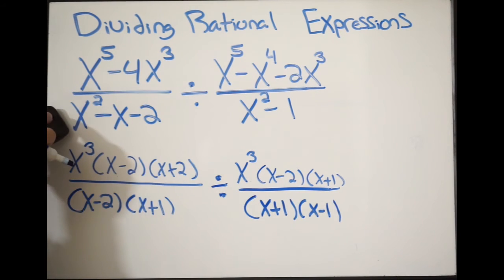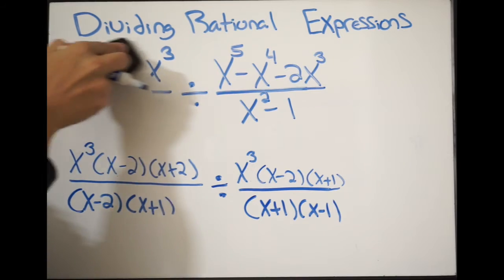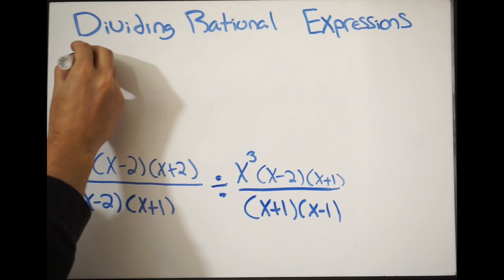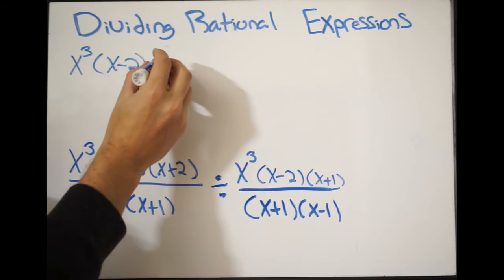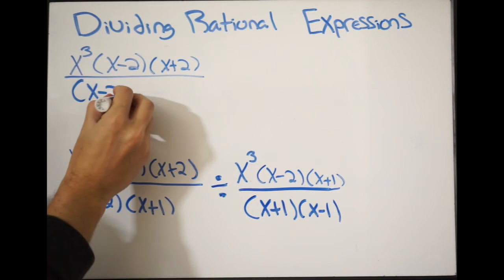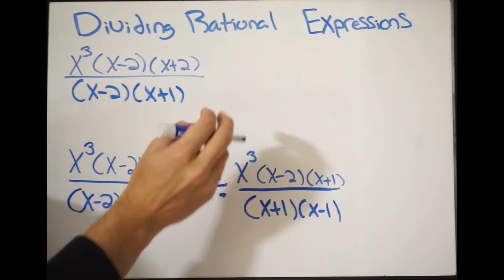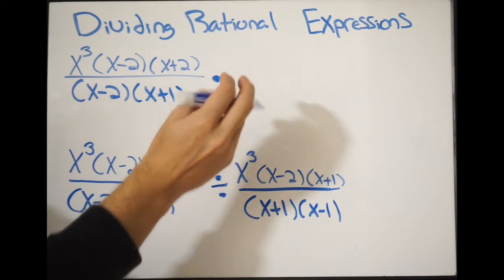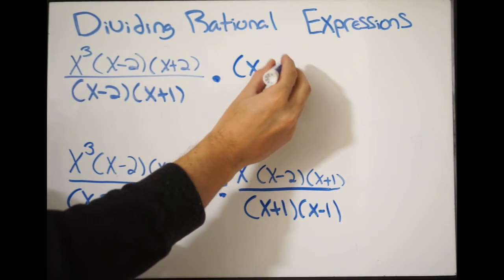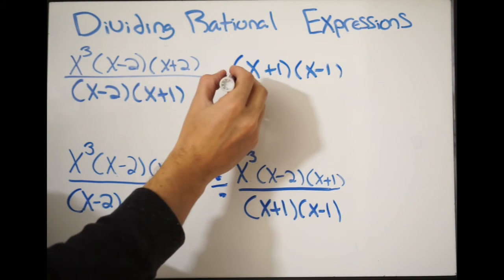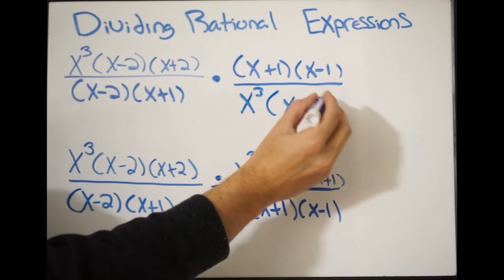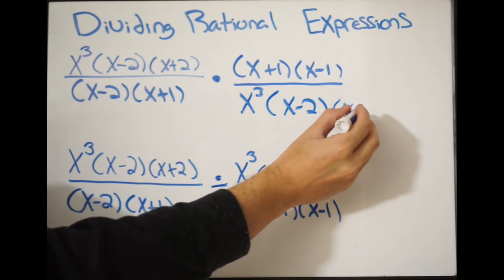I'm going to erase this and rewrite. We have x to the third times x minus 2 times x plus 2, all over x minus 2 times x plus 1. Now, changing to multiplication and flipping, we have x plus 1 times x minus 1 over x to the third times x minus 2 times x plus 1.